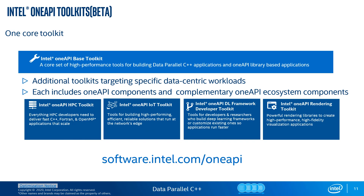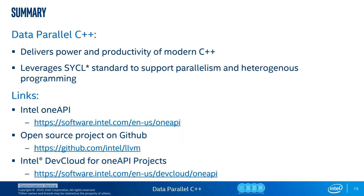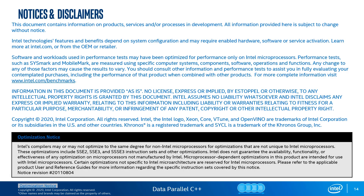For example, in the OneAPI HPC Toolkit you may find additional HPC tools like a Fortran compiler. You can download toolkits for free and find more details on each toolkit at software.intel.com. As a summary note, DPC++ delivers the power and productivity of modern C++ and leverages SYCL standards to support parallelism and heterogeneous programming. Thank you for your attention and now we are open for questions.